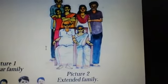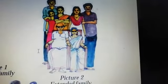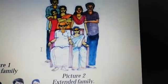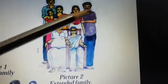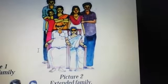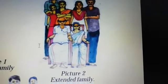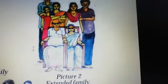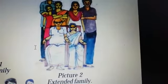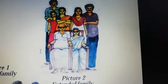In picture 2, we can see Grandparents, Parents and Children. When 2 or 3 Nuclear Families live together, they form an Extended Family. In the second picture, more members are there — that is Grandparents, Parents and Children. When more than one Nuclear Family lives together, we can call it an Extended Family. Extended Family means Vistrita Kudumba.